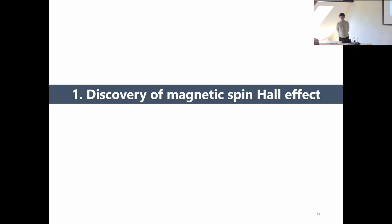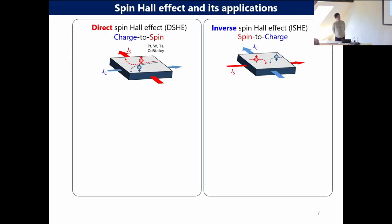Let's move to the first topic: the discovery of the magnetic spin Hall effect. This is a general introduction of the spin Hall effect. By using the direct spin Hall effect, it means charge current to spin-current conversion. When a charge current is applied to a heavy element material like platinum, the spin current is generated in the perpendicular direction — in case of the spin Hall effect.